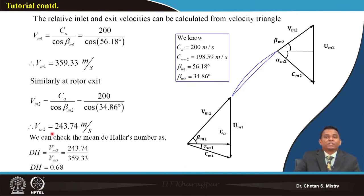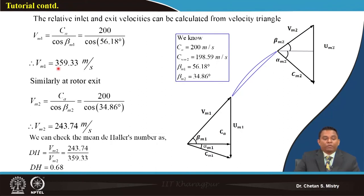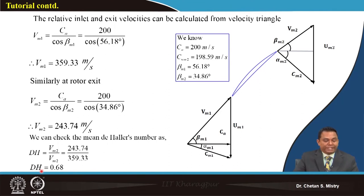We calculate the relative velocities to verify key parameters. The relative velocity at entry is 359.33 m/s and at exit is 243.74 m/s, giving a de Haller factor of 0.68.